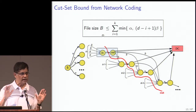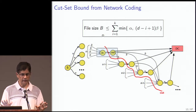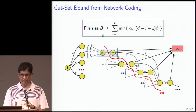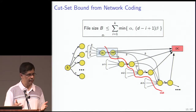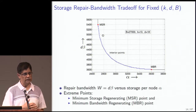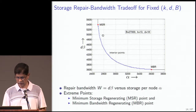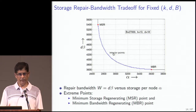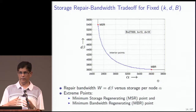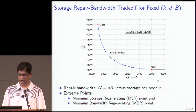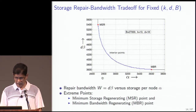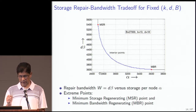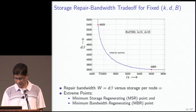For given k, d, and file size B, there are multiple choices of α and β satisfying the optimality equation, giving different flavors of optimality. This gives rise to the storage-repair bandwidth trade-off, where every point on the curve represents an optimal code. Along the x-axis is α, representing the amount of data stored per node; along the y-axis is d·β, the amount of data downloaded to repair a failed node.